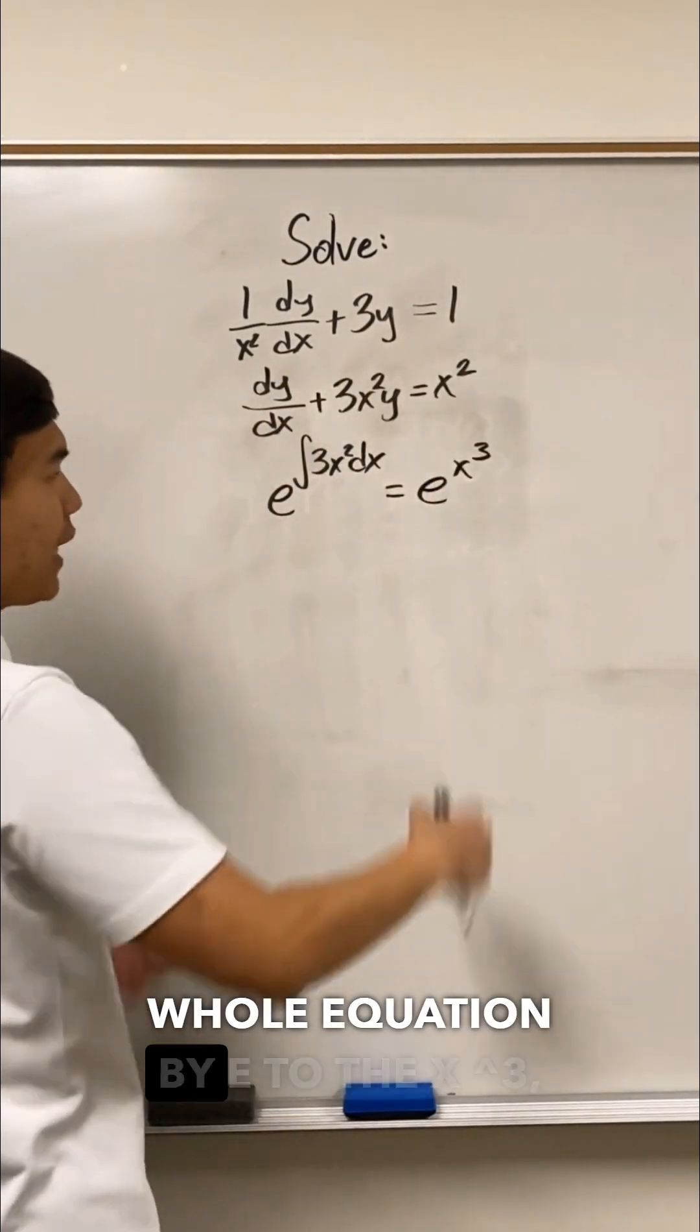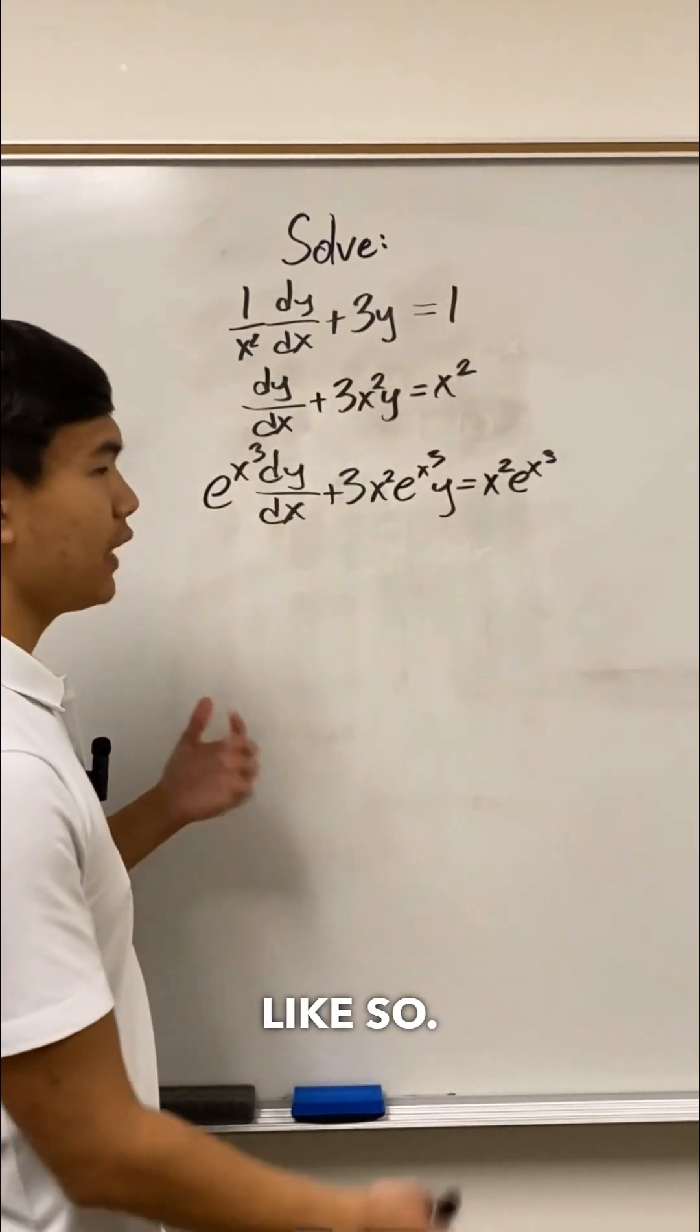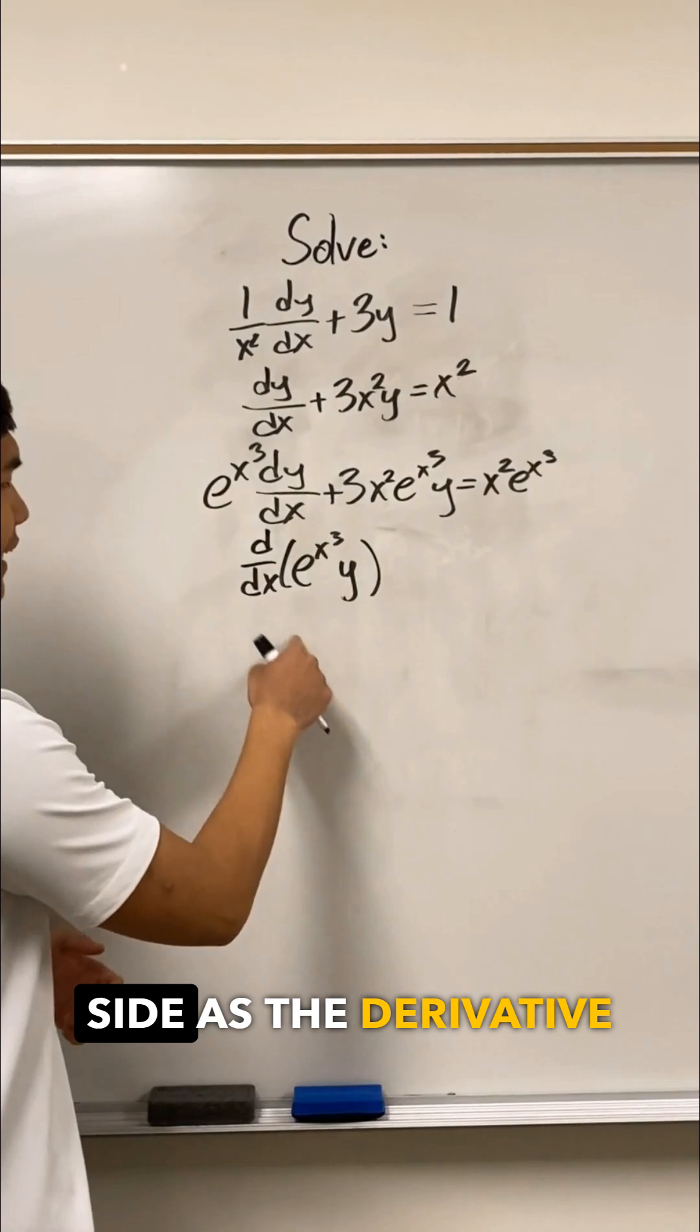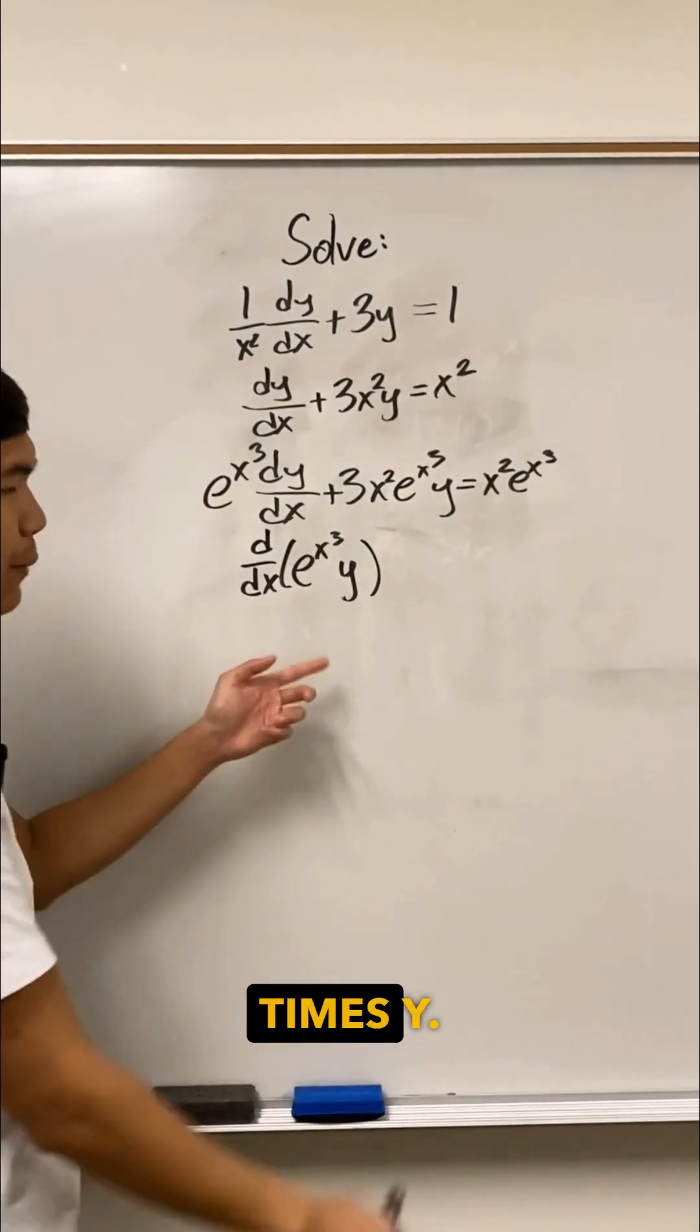So now we're going to multiply the whole equation by e to the x cubed. And now look, we have first d second plus second d first. So now I can just write the left side as the derivative of e to the x cubed times y.